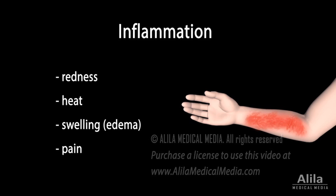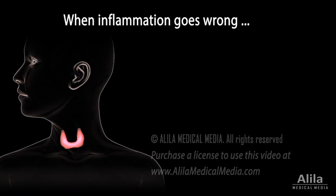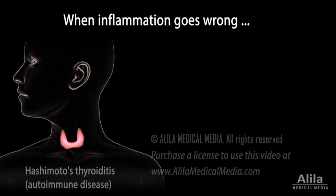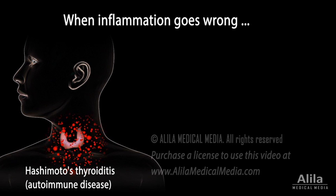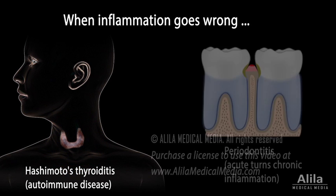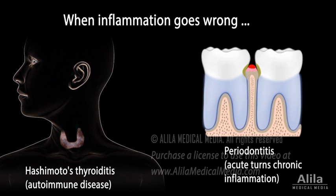Inflammation is an important defense mechanism, but it can be a double-edged sword when things go wrong. An autoimmune disease may result when inflammation targets and destroys the body's own cells. An acute inflammation that fails to stop after the original insult is cleared can become chronic and damaging to healthy tissues.